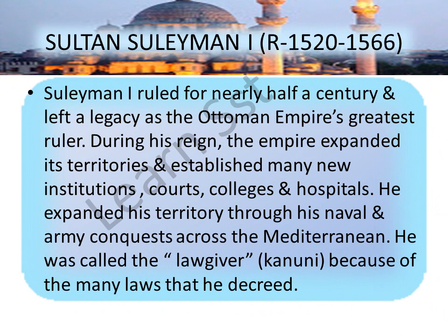Sultan Suleiman I ruled from 1520 to 1566 — nearly half a century, about 50 years — and left a legacy as the Ottoman Empire's greatest ruler. During his reign, the empire expanded its territories and established many new institutions: courts, colleges, and hospitals. He expanded his territory through naval and army conquests across the Mediterranean. He was called 'the Lawgiver,' or in their language Kanuni, because of the many laws that he decreed.